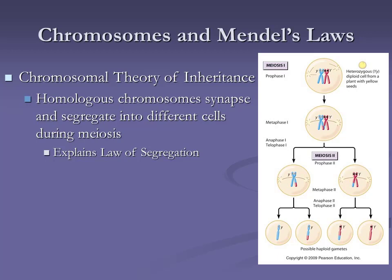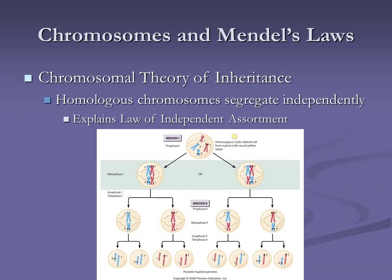Mendel had no clue what DNA or chromosomes were — he knew something was carrying the code passed on from parent to offspring. We now know that's all wrapped up in our chromosomes, genes, and alleles. The law of segregation is clearly visible in meiosis I, where homologous chromosomes pair at metaphase I and then separate — that separation is the segregation of alleles that were on those chromosomes.